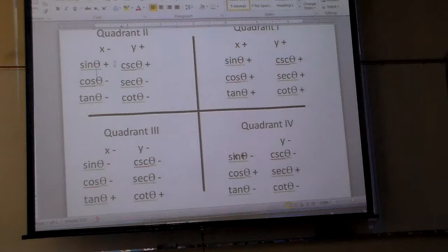Sine is positive in quadrants 1 and 2, and cosine is negative in quadrants 2 and 3. So where do they overlap? Quadrant 2. The answer is quadrant 2.